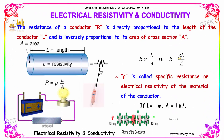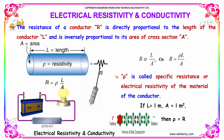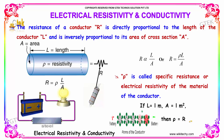The resistance of a conductor R is directly proportional to the length of the conductor L, and it's inversely proportional to its area of cross-section A. So, R is directly proportional to L divided by A. R is equal to rho times L divided by A, where rho is called the specific resistance or electrical resistivity of the material of the conductor. If L is equal to 1 meter and A is equal to 1 meter square, then rho is equal to R.